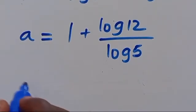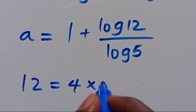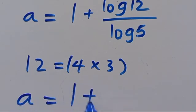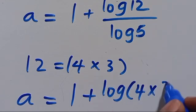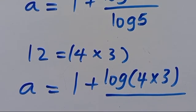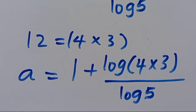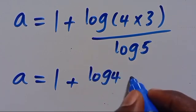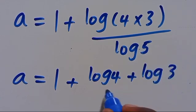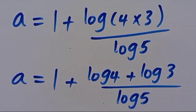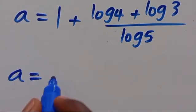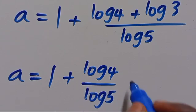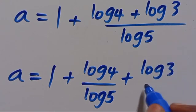From here, we can write 12 as the product of 4 times 3. Substituting, we have A equals 1 plus log of 4 times 3 in parentheses, divided by log 5. Applying the log product rule again: A equals 1 plus log 4 plus log 3, divided by log 5. Splitting the fraction: A equals 1 plus log 4 divided by log 5, plus log 3 divided by log 5.